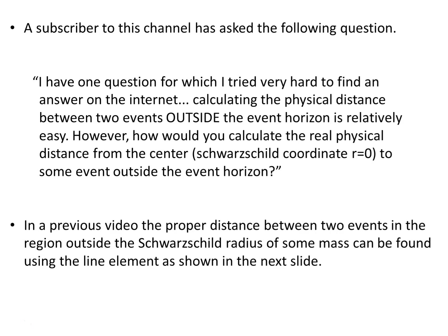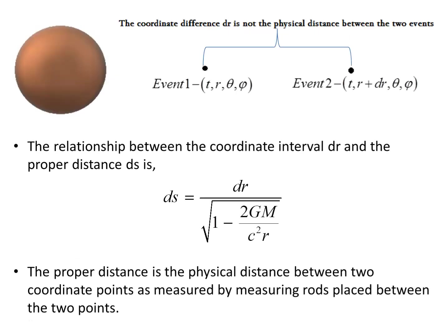In a previous video, the proper distance between two events in the region outside the Schwarzschild radius of some mass can be found using a line element. The coordinate distance dr is not the physical distance between two events — it's simply the result of the difference between coordinates. Coordinates are not physical measurements; they don't represent physical measurements, so dr is not the same as laying down measuring rods and instantaneously determining the distance between two points.